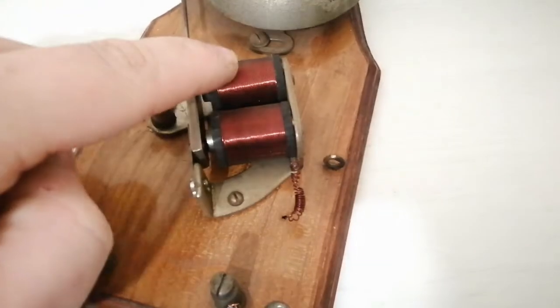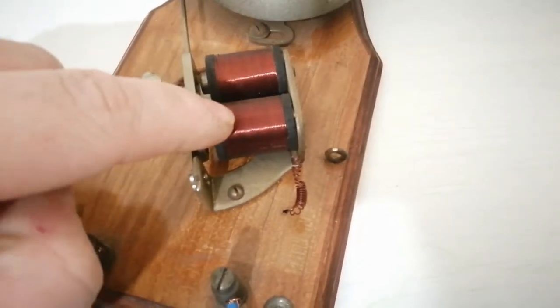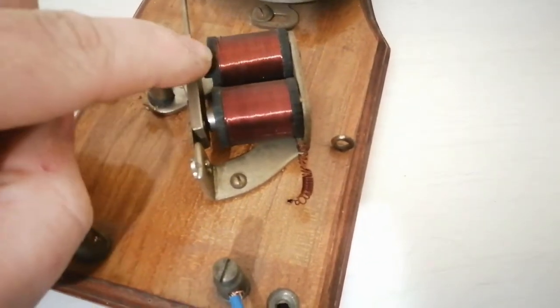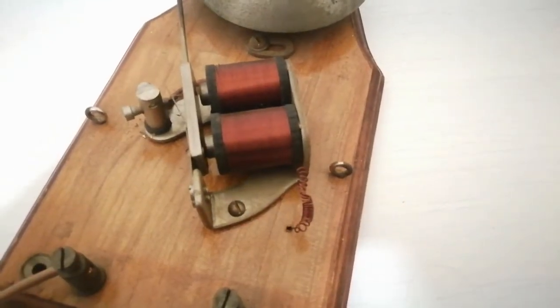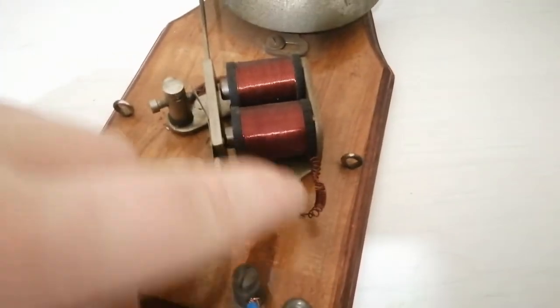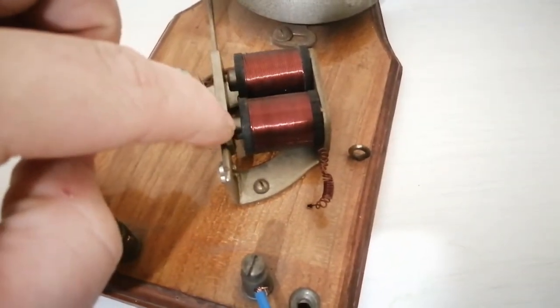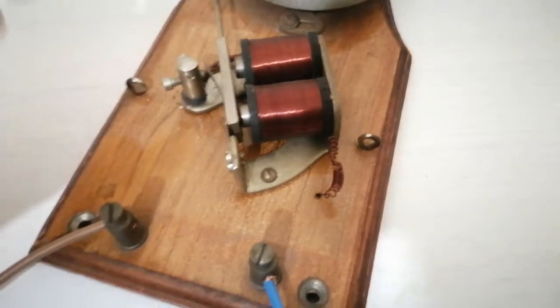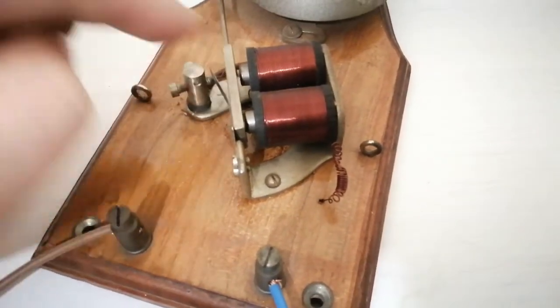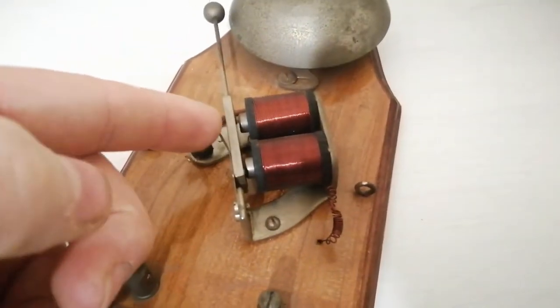So these two coils here, there's a load of wire coiled up around a metal core which you can see poking out. And if we put electrical current through this wire and one on the other side, that core becomes essentially a magnet and it'll attract this arm towards it. And when that happens, it dings the bell.